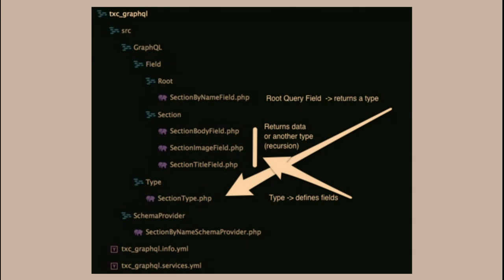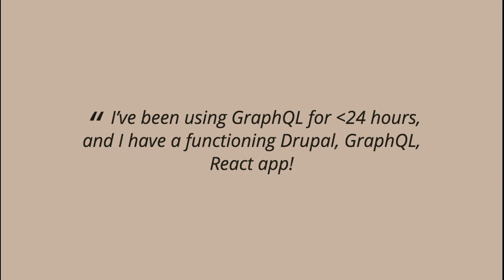So I started writing the GraphQL backend for the TexasCamp website, which is built in React. We already had a Drupal site with backend data in it. The structure looks like this: you first define the root query field — here it's 'sectionByName' — which returns a type, which I have as the 'section' type. On the section type, you define what fields are available — I said I want to return a body, an image, and a title. So it's really just three classes, a little schema glue, and you've got data being returned out of your GraphQL API. In just a couple of hours after figuring out a few things — which hopefully you now don't have to — I had a totally functioning GraphQL app. In about 30 minutes I plugged in the Apollo stuff with React, and I had React querying and getting data from Drupal. It's a fully functional Drupal, GraphQL, and React app. It's very easy.